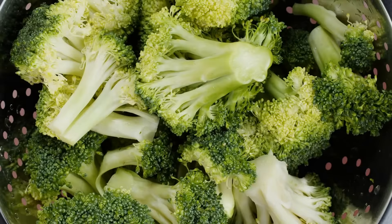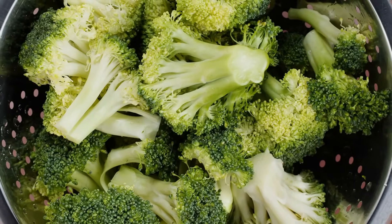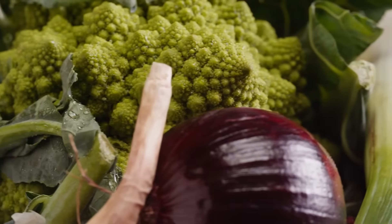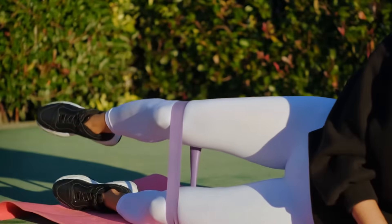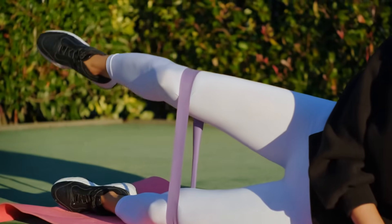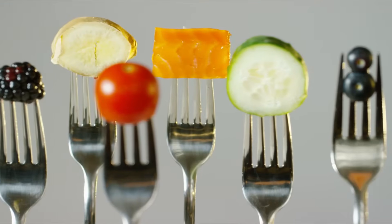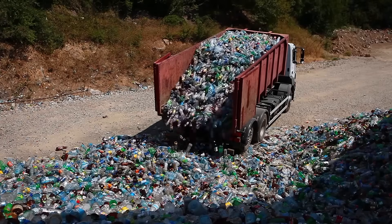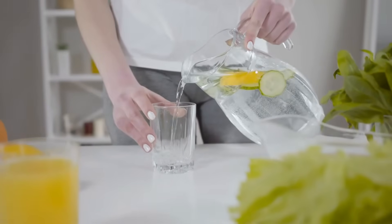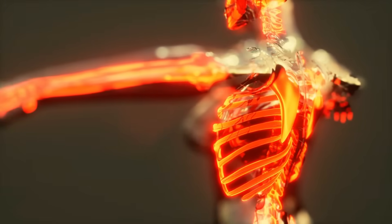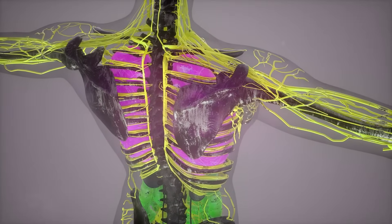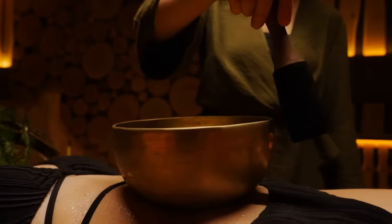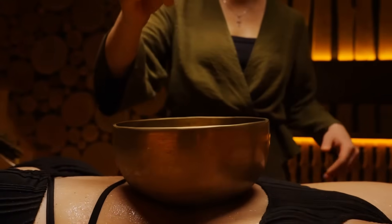Supporting your body's natural detox processes can make a dramatic difference. Drink plenty of water. Eat cruciferous vegetables like broccoli and Brussels sprouts, which support your liver. Move your body daily to stimulate your lymphatic system. Try intermittent fasting or sauna therapy to help eliminate cellular waste. These practices are simple, but powerful. Less brain fog. Less anxiety. Better sleep. More clarity.